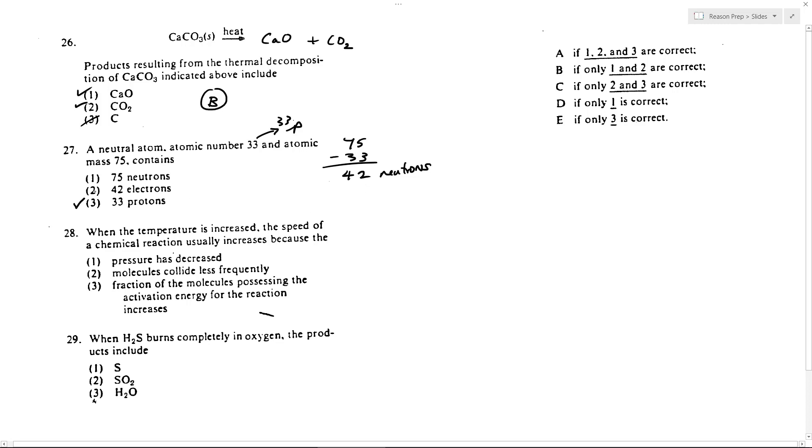They say 42 electrons. Now that can't be right, because if we had 42 electrons, this would be a minus nine charge, right? 33 positive protons, 42 negative electrons. That doesn't make sense. In fact, given that it says it's neutral, we actually have 33 electrons, not 42. And then one is false because we've got just 42 neutrons, not 75. So only three is going to be correct here, and so that gets us E.